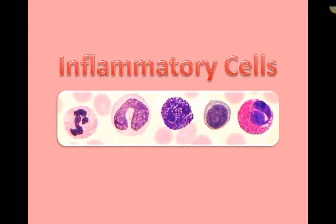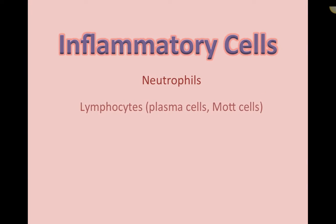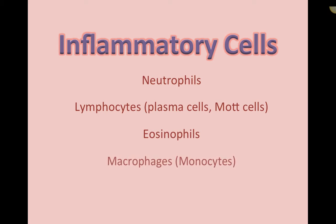Let's look at some inflammatory cells. The four inflammatory cells of interest that we'll focus the majority of our time on throughout the semester are neutrophils, lymphocytes, eosinophils, and macrophages. Lymphocytes can be broken down into plasma cells and mott cells, as well as lymphocytes themselves — they just have different variations.